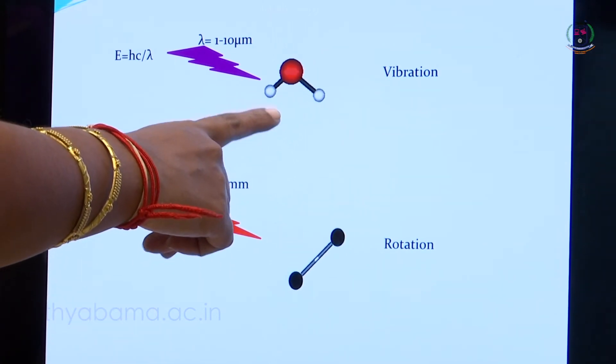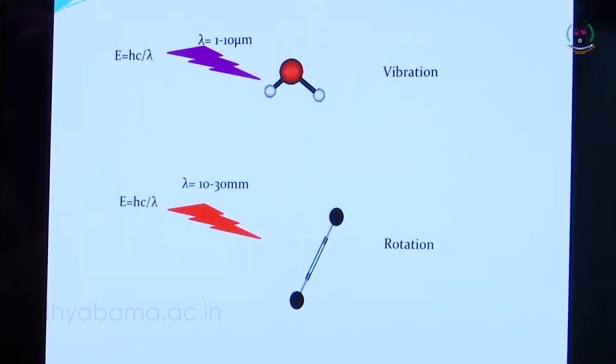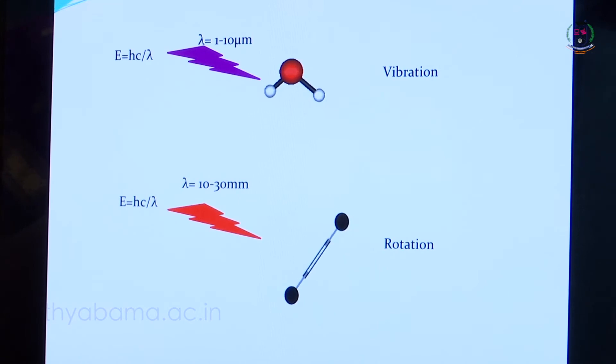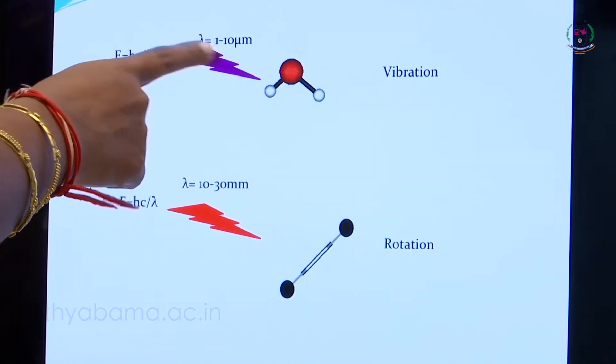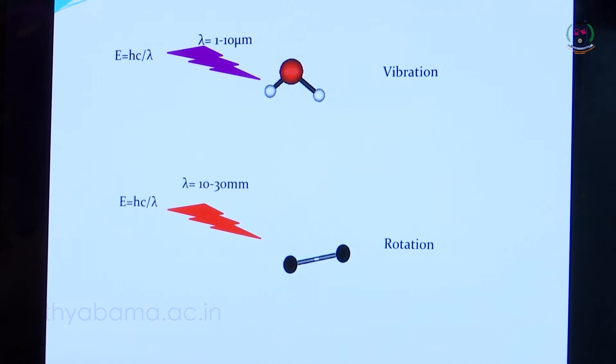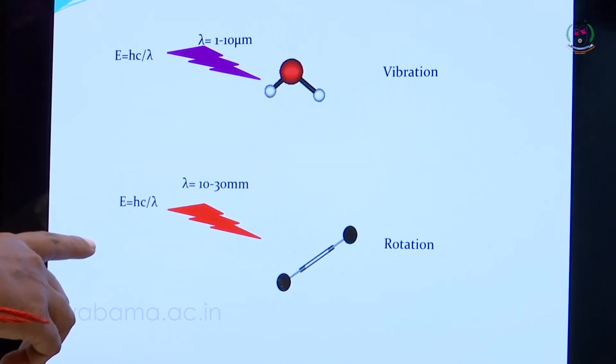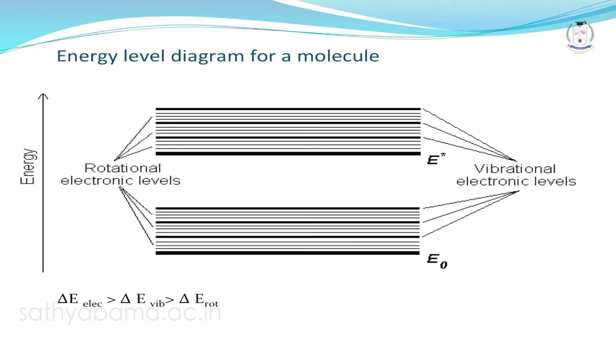If a substance absorbs wavelengths from 10 to 30 millimeters, where the wavelength increases and energy decreases, it leads to changes in the rotational energy levels of the molecule — this is called microwave spectroscopy. If a sample absorbs radiation in the nanometer range, it results in changes in electronic energy levels, and this type of spectroscopy is known as UV-visible spectroscopy.